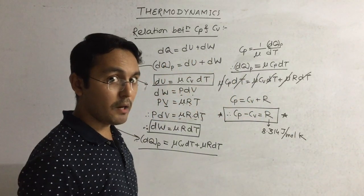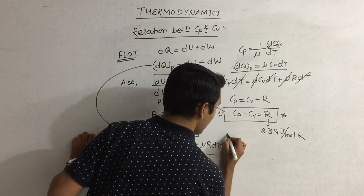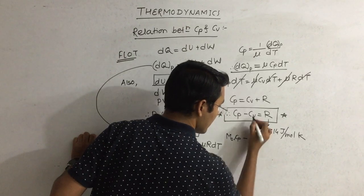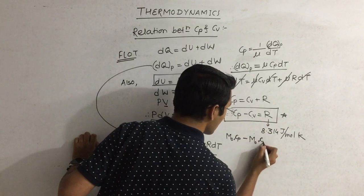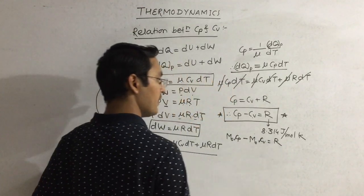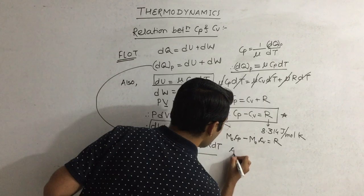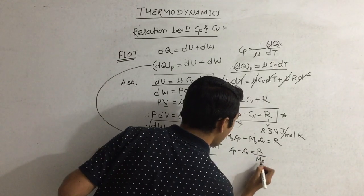Now one more important thing to note: in place of capital Cp we can write molar mass times small cp, and in place of Cv we can write molar mass times small cv. Dividing by m0, the molar mass of the gas, we get small cp minus small cv is equal to R upon m0.